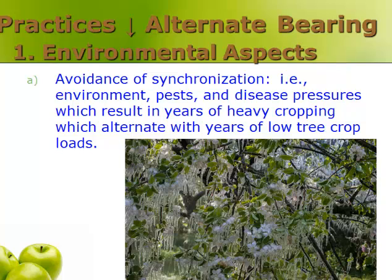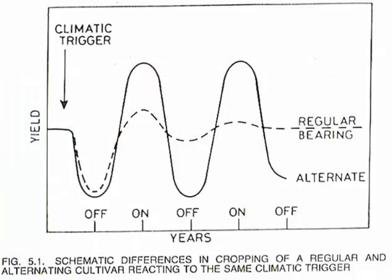Practices to decrease alternate bearing include environmental factors such as avoidance of synchronization. Environments, pests, and disease pressures can result in low crop yields and trigger an alternate bearing cycle. A late spring frost in an apple orchard, as shown in the picture, will significantly decrease yields this year and result in a bumper crop the next year. Once a climatic trigger like a hard frost at bloom is pulled, the alternate bearing species is set in a cycle of low followed by high yields. Yields of regular bearing species even out over time, as shown.